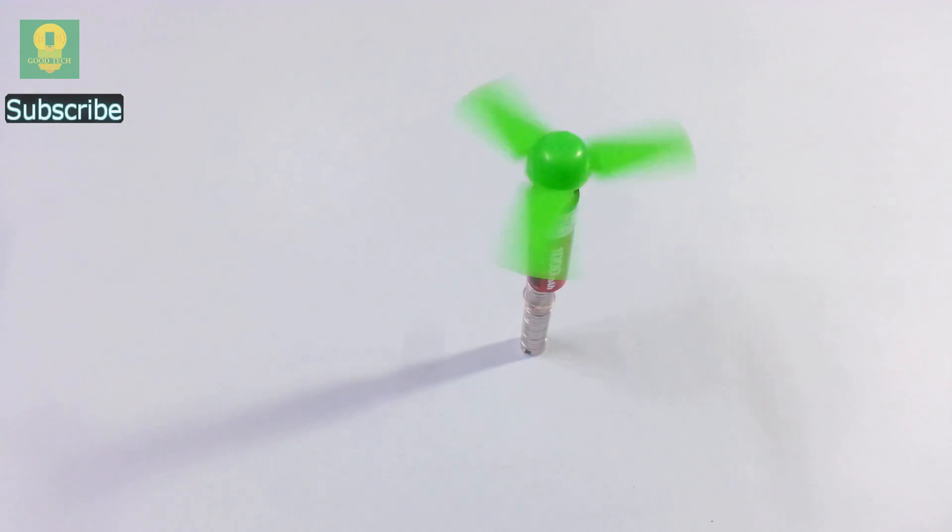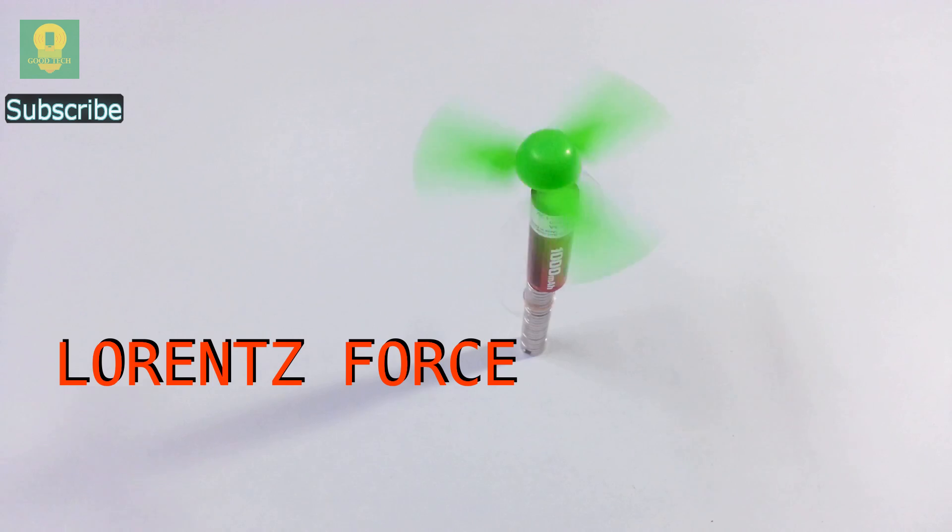This happens because the current from the cell flows in the wire through the magnets, thus creating a force that makes the coil rotate. This force is known as Lorentz force.